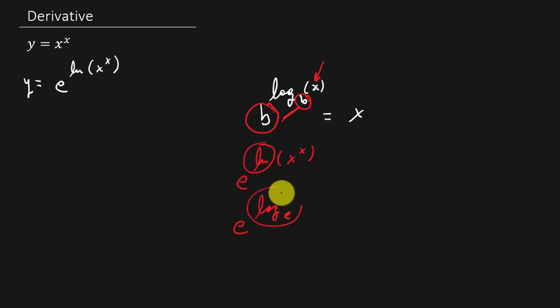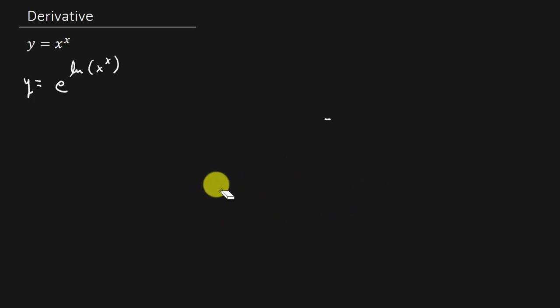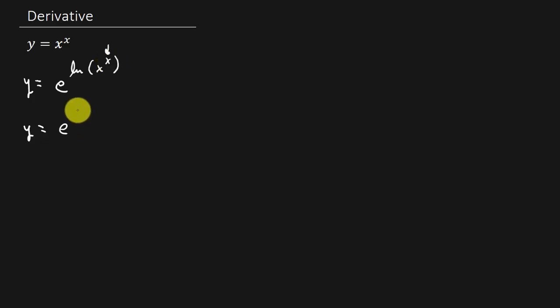Remember, natural log is the same thing as log base e. So e raised to the natural log of x raised to the x is equal to x raised to the x, which is our original problem. And we have another property that says we can take this exponent — that x — and write it in front of the natural log.